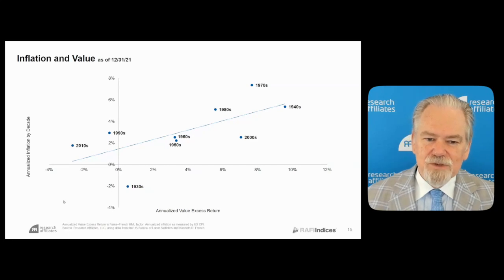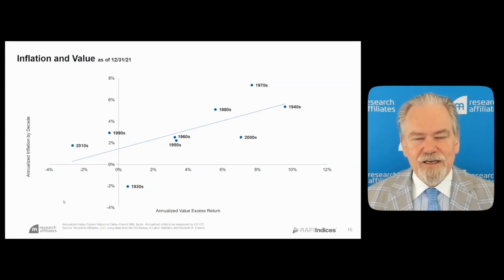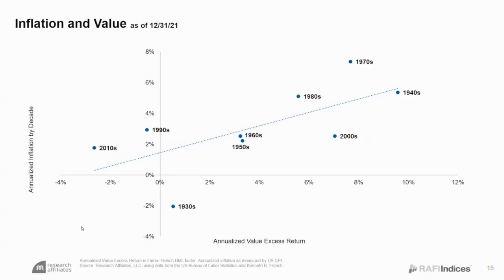In disinflation, value sometimes wins, sometimes loses. In an inflationary regime, value tends to win. We went back over the past nine decades and asked: what was the rate of inflation during that decade and how did value perform? The biggest outlier on the downside was the 1930s — a lot of value stocks went bust because the Great Depression really was a Great Depression. In the 1970s, there were economic dislocations, but most value stocks were cheap and outperformed. This is what a correlation of 80% looks like. If we're in a regime where inflation is two to four percent or higher, that's likely to bode very well for value stocks.